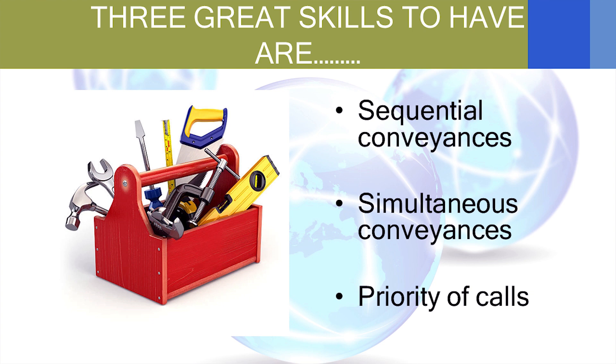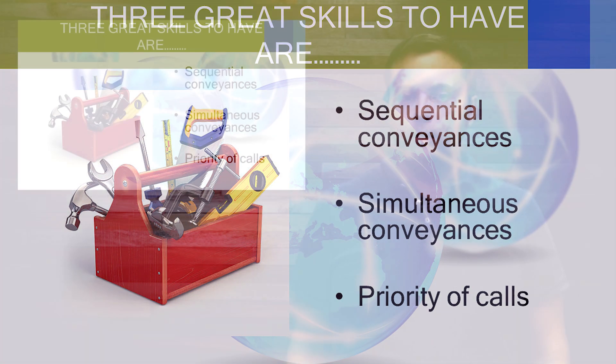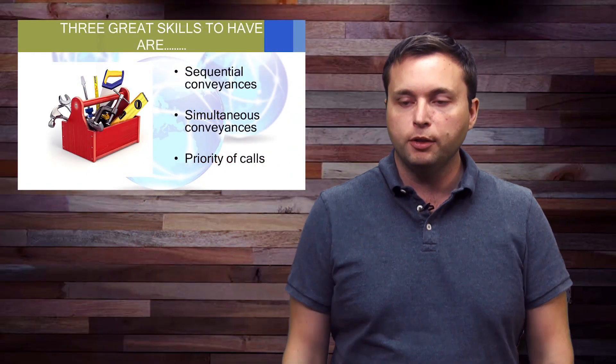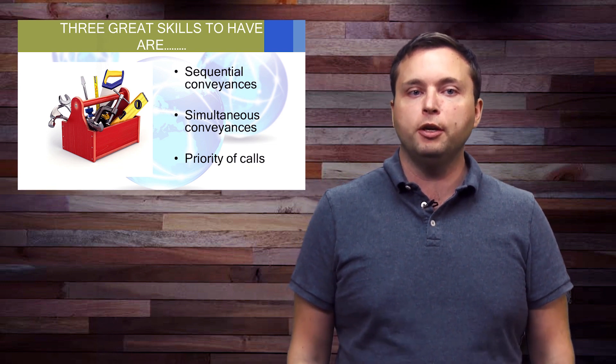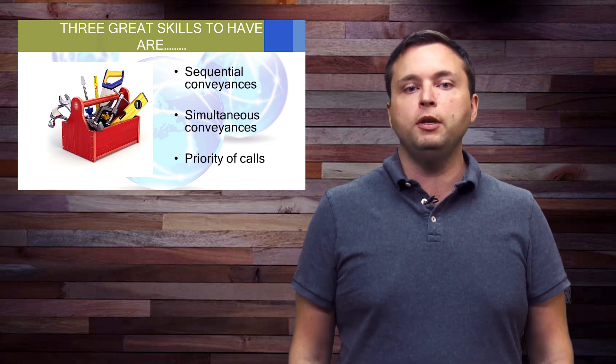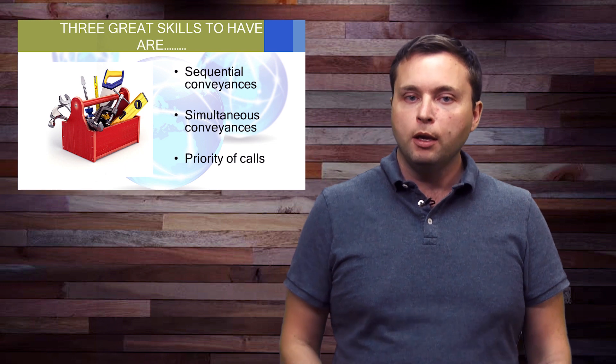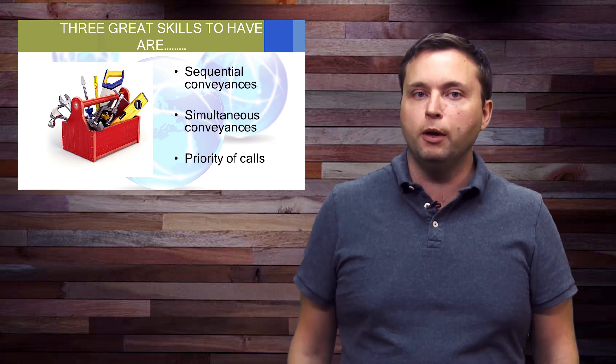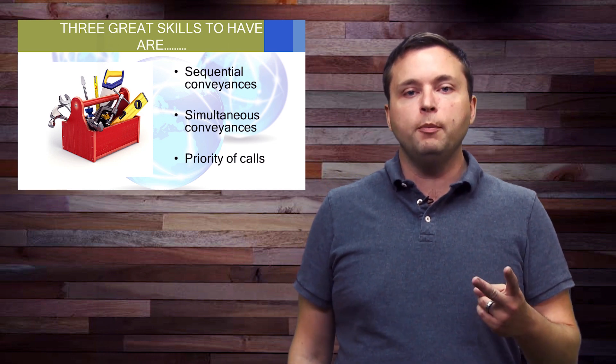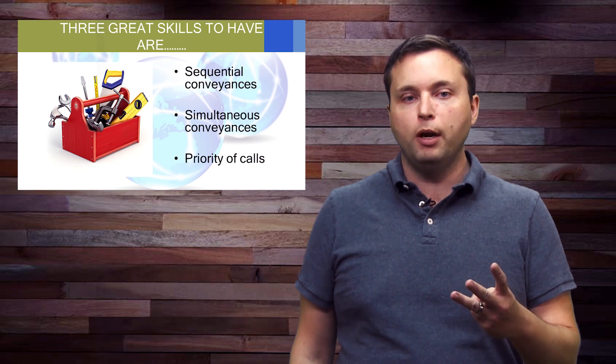You will get questions about this stuff in the legal. You will also have to use this. And if you don't know this stuff, you will have absolutely no chance of passing the analytical. So let's do a real deep dive and let's go through these subjects. Now if you'd like a really in-depth discussion, we spend about 30 minutes per subject on each of these three in the RPLS bundle. But let me give you a brief preview of what we talk about. And let's go through and talk about sequential conveyances, simultaneous conveyances, and priority of calls.